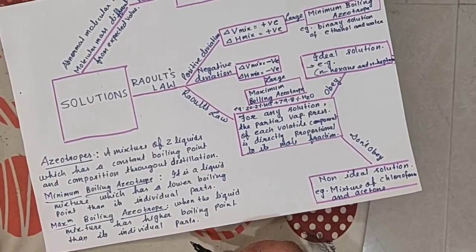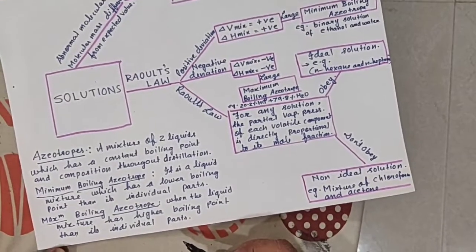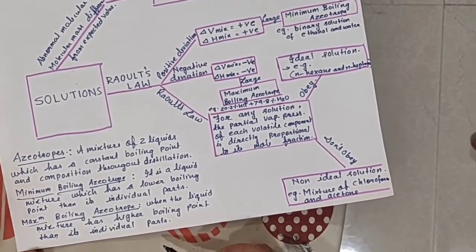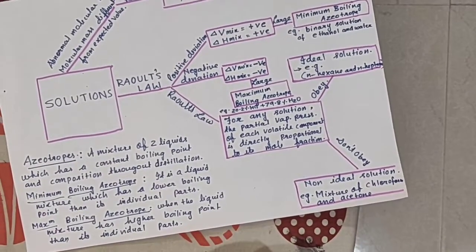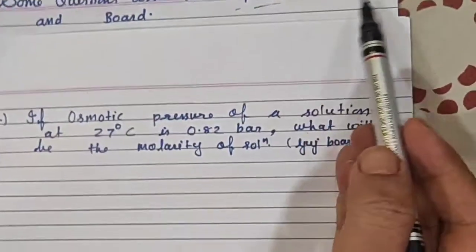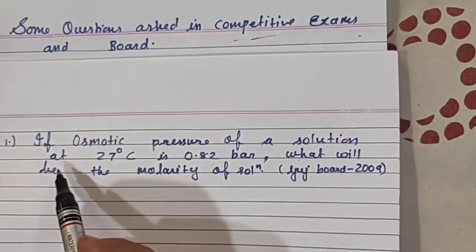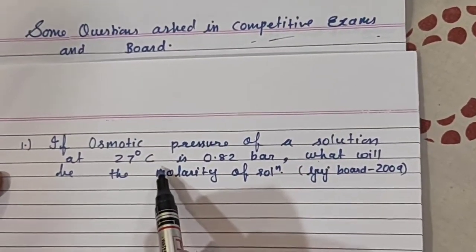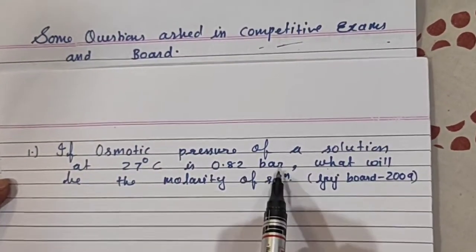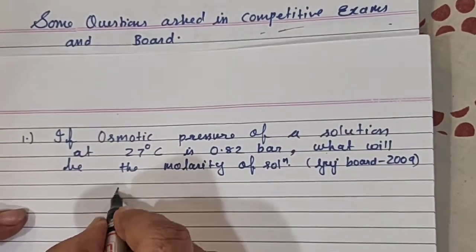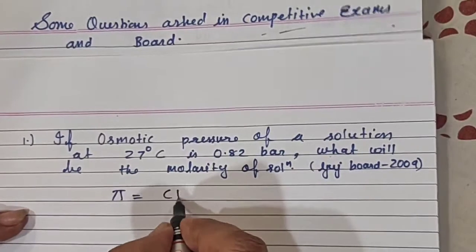Now during revision, I will give you some questions and I will also solve the questions. Then I will give you homework that you have to solve at home. Some questions from competitive exams and boards. First question: if osmotic pressure of a solution at 27°C is 0.82 bar, what will be the molarity of the solution? Which formula you will use? π = CRT, very simple.